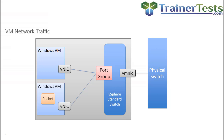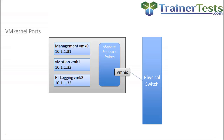A quick review of the terminology: a vNIC is a virtual network interface card on a virtual machine. Our VMs connect to a virtual machine port group. And if the traffic needs to hit the external physical network, a VMNIC or physical adapter is used. Now those virtual machine port groups are for virtual machine traffic only — everything else is handled by a VMkernel port.